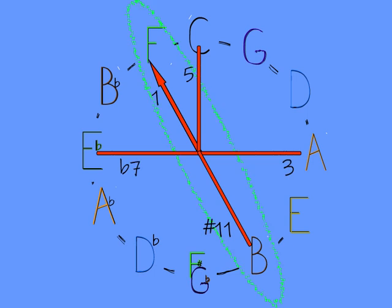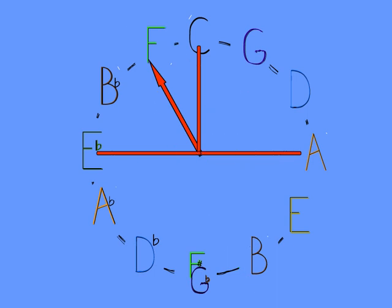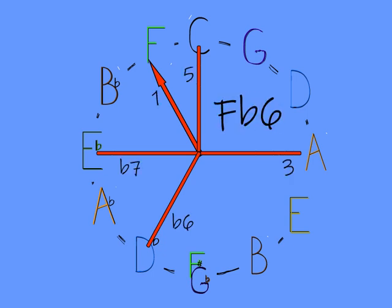The sharp 11 is the tritone of the root note, so it's another way to add dissonance. The sharp 5 is also the b6, or the b13.